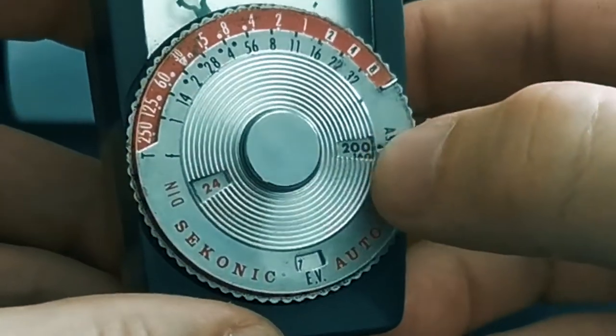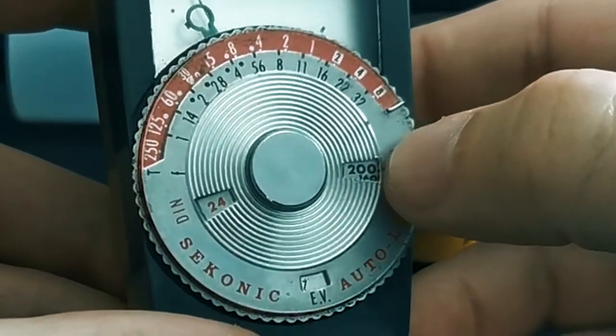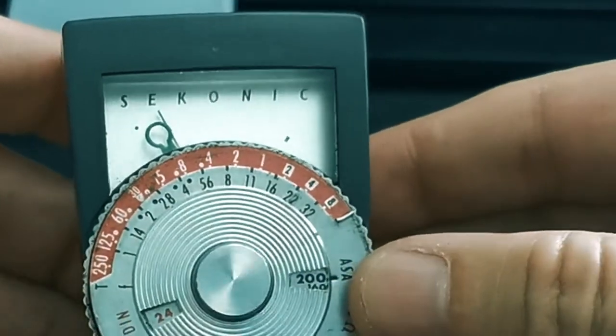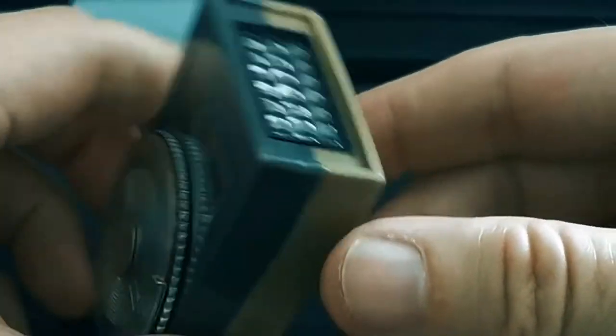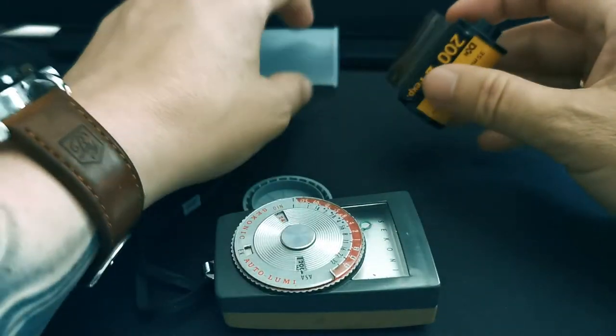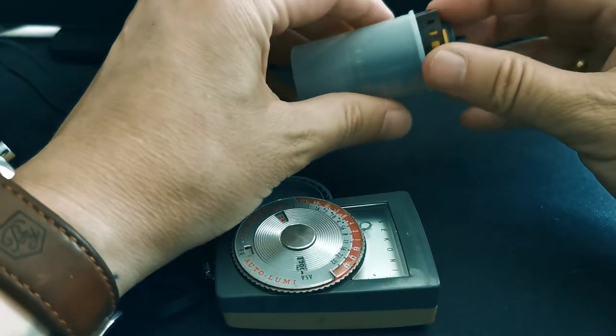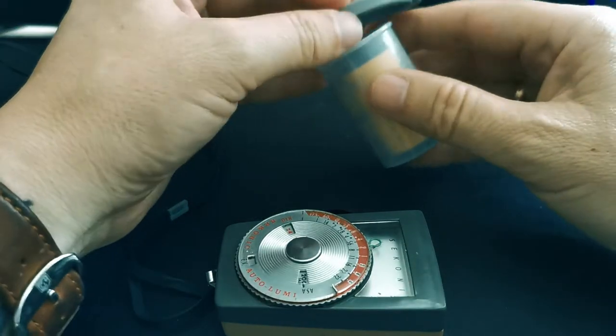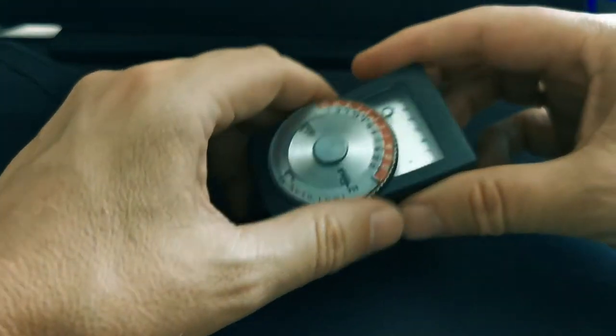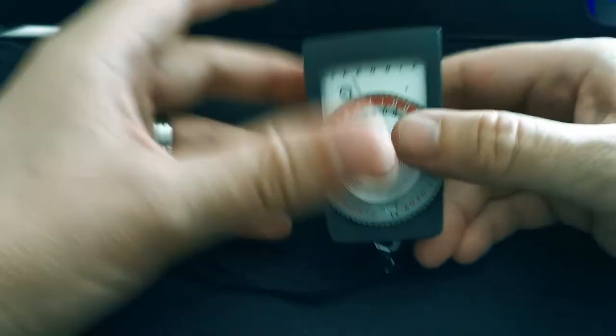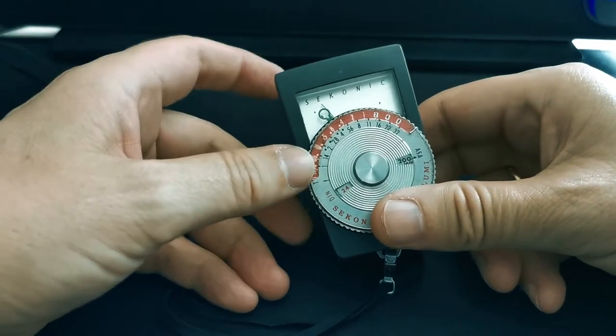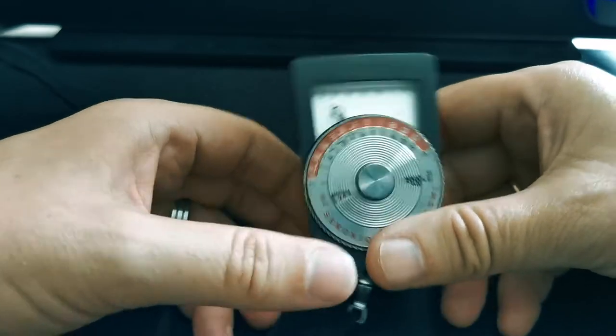So basically, the first thing we do is we need to set this to our correct film speed, which is to say if I'm using this one here, it's already set to 200, so we're looking good. The next thing we need to do is point this at our subject. Now it's worth mentioning here that the idea of this device is to measure the light being reflected off your subject, not generally the light in the area. So for portraits, for instance, you would be holding this up to the person's face. It wouldn't be a case if you were standing back by your camera and measuring it.